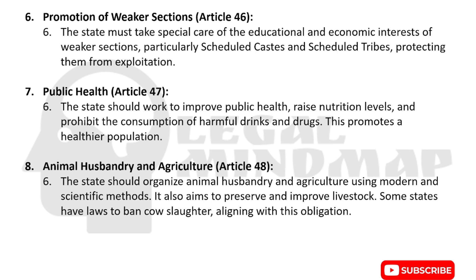Article 46 on promotion of weaker sections: the state should promote the interests of weaker sections like Scheduled Castes and Scheduled Tribes, protecting their rights and giving them reservations. Article 47 on public health: the state should work to improve public health, raise nutrition levels, and prohibit the consumption of harmful drinks and drugs. This is why alcohol has rules and regulations or bans in some areas.